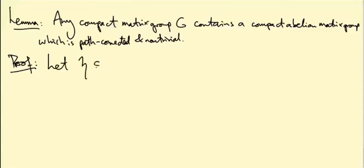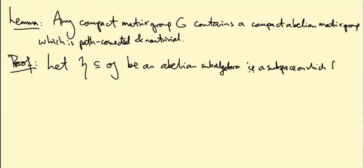Let little h inside the Lie algebra of G be an abelian subalgebra. What does that mean? Abelian subalgebra means it's a subspace of little g on which the Lie bracket vanishes. That's because this is the commutator bracket, so it vanishes when two matrices commute. That's why the word abelian is being used here.